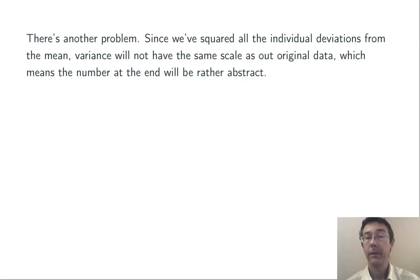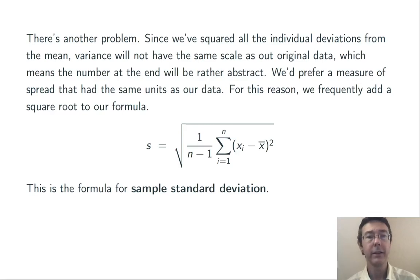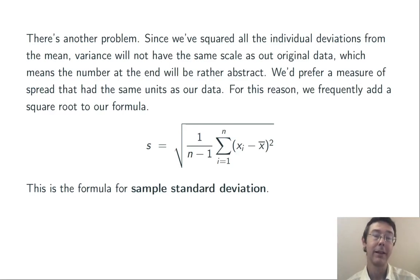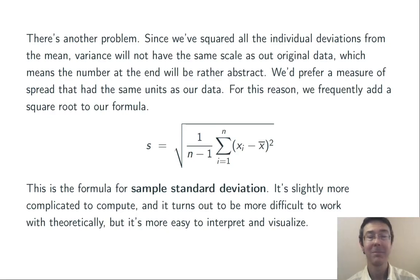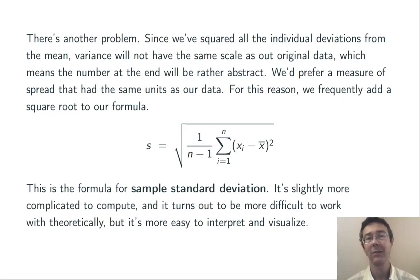One more problem: since we've squared all the individual deviations from the mean, variance doesn't end up being on the same scale as our original data, which means the number we get is rather abstract. Ideally, we'd like a number we can interpret — one on the same scale as our data. So we handle that by taking the square root of the sample variance, which gives us the formula for the sample standard deviation. It's more work to compute and theoretically more difficult to work with, but it's much easier to interpret and visualize. Bottom line: we need both standard deviation and variance in different circumstances.